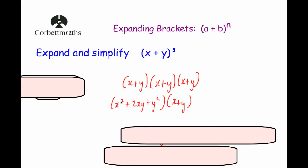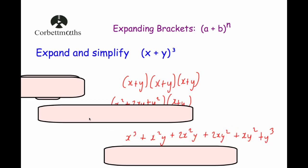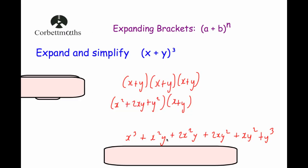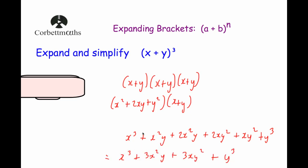We would multiply x squared by x, x squared by y, and so on. That gives x cubed plus x squared y plus 2x squared y plus 2xy squared plus xy squared plus y cubed. Collecting like terms, the final answer is x cubed plus 3x squared y plus 3xy squared plus y cubed.